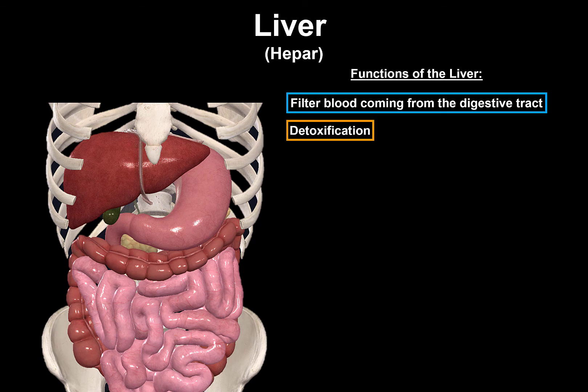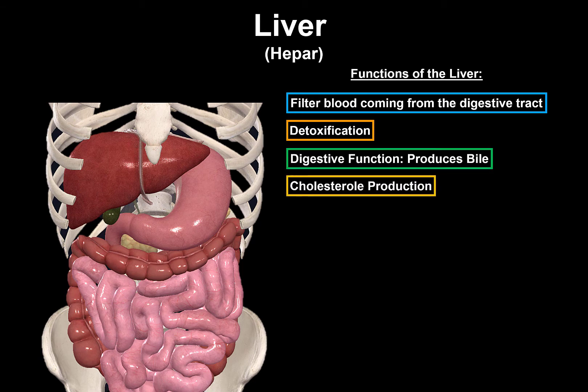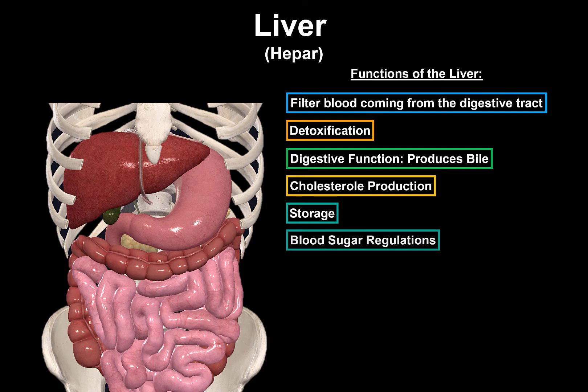The liver also detoxifies the body by transforming potentially harmful substances, such as drugs and alcohol, into harmless products to be eliminated in the bile or urine. It also produces cholesterol, which is used for the production of certain hormones and vitamin D. Many nutrients are stored in the liver as well, including certain fats and glycogen. This glycogen can be used in case of low blood sugar, for example. So the liver has many functions.